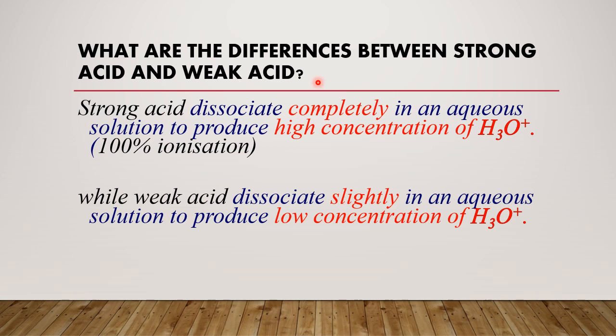You have to get in mind that strong acid dissociates completely in an aqueous solution to produce high concentration of hydronium ion, 100% ionized, while weak acid dissociates slightly or partially in an aqueous solution to produce low concentration of hydronium ion.